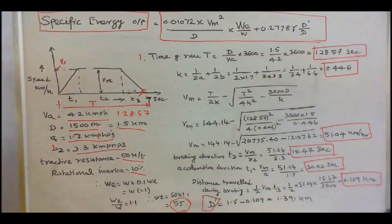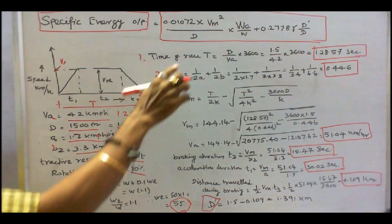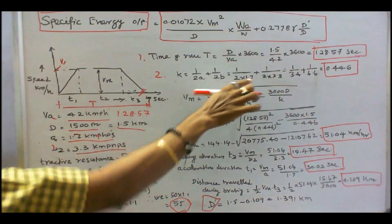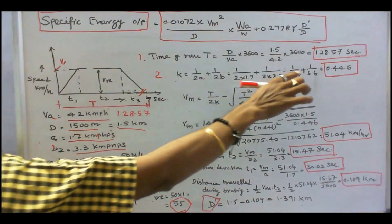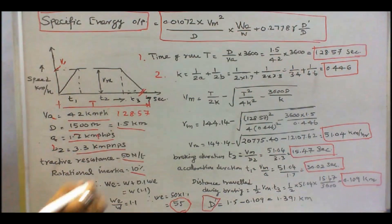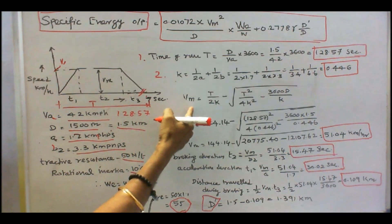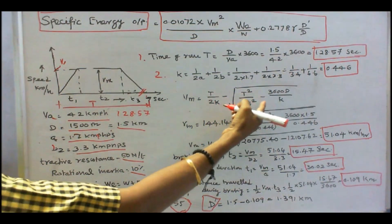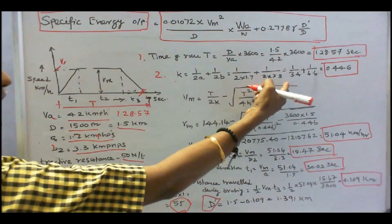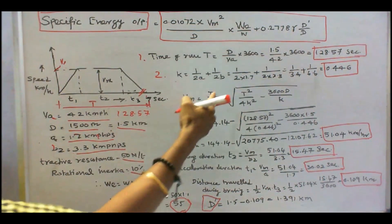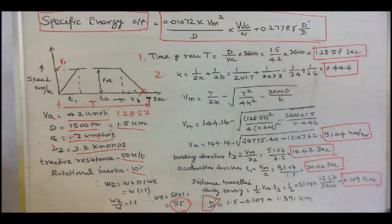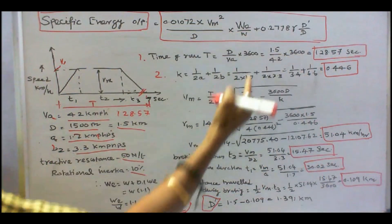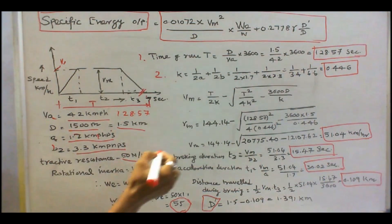Next, we find K. K = 1/(2A) + 1/(2B), where A = 1.7 and B = 3.3, giving K = 0.446. Then Vm = T/(2K) − √(T²/(4K²) − 3600D/K). Substituting T = 128.57, K = 0.446, and D = 1.5, we find Vm = 51.04 km per hour.